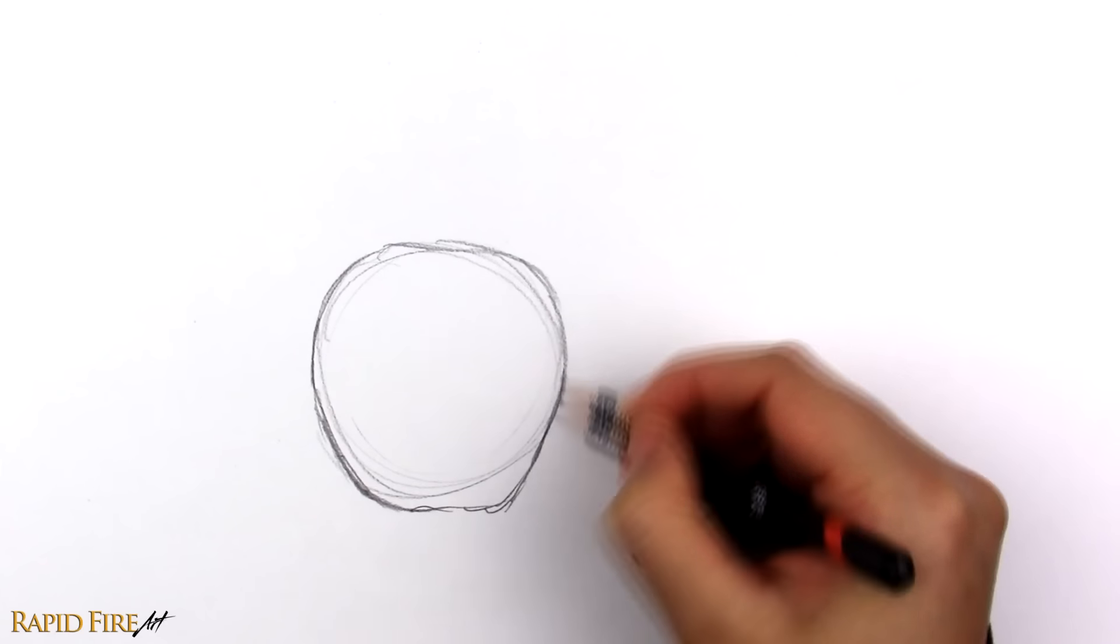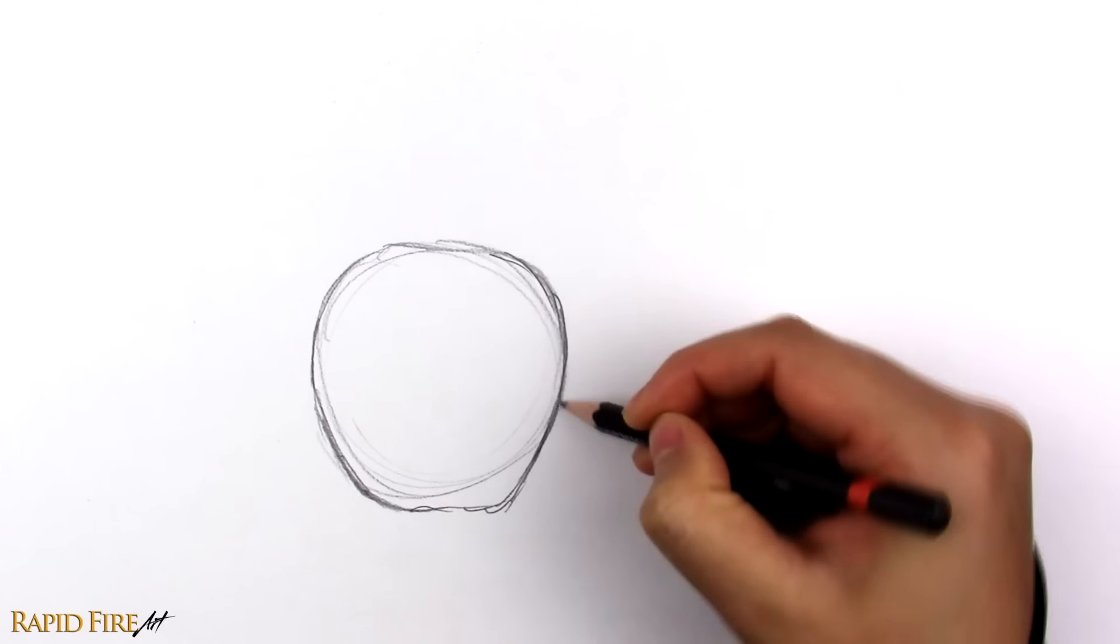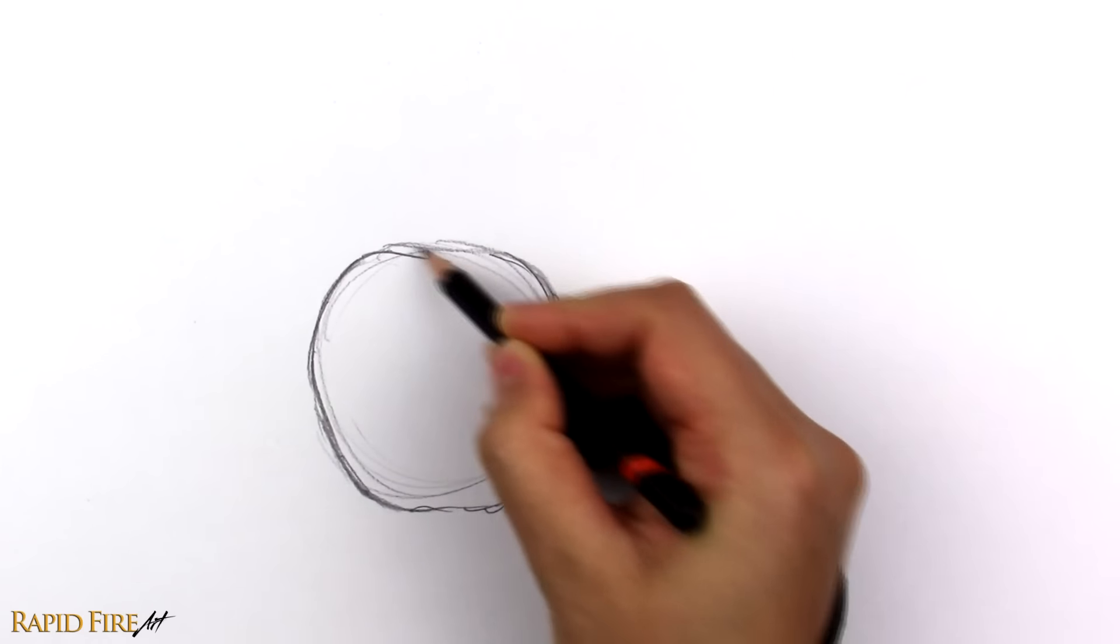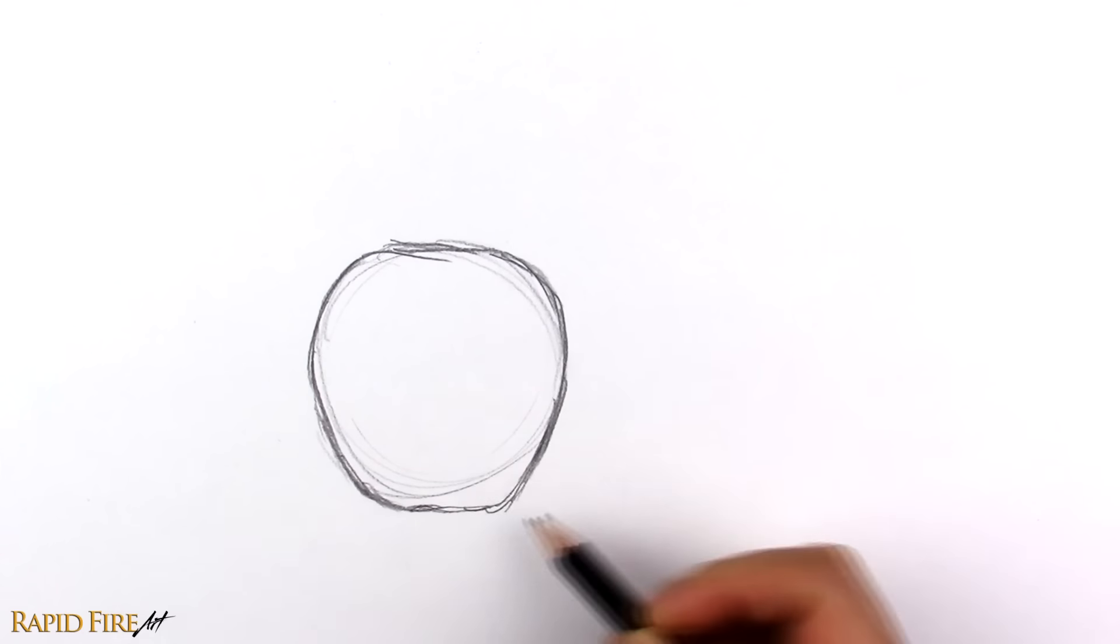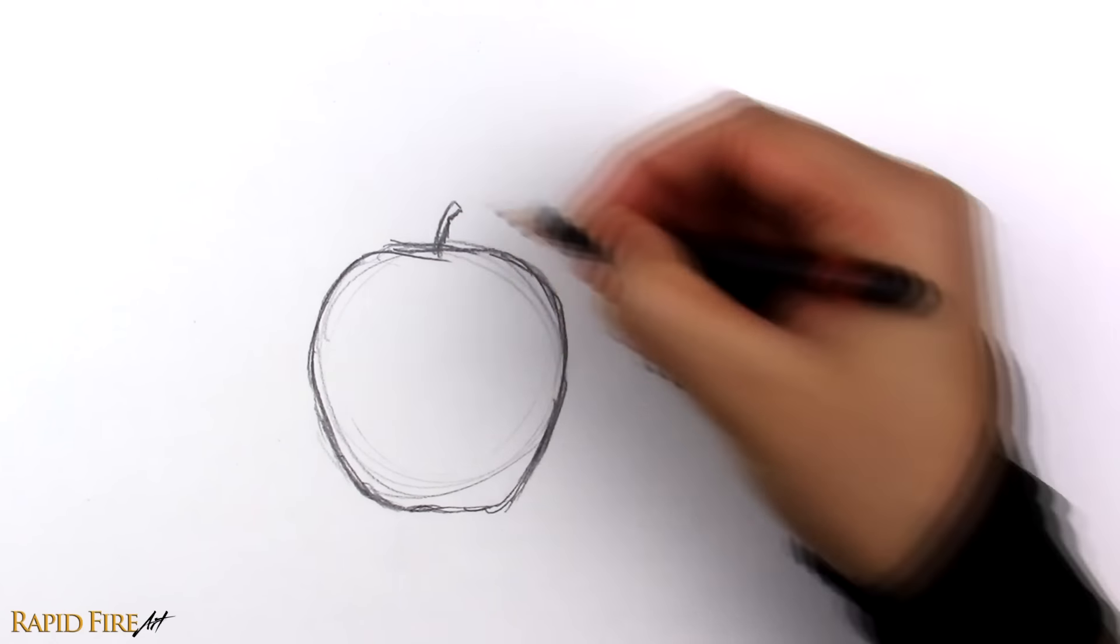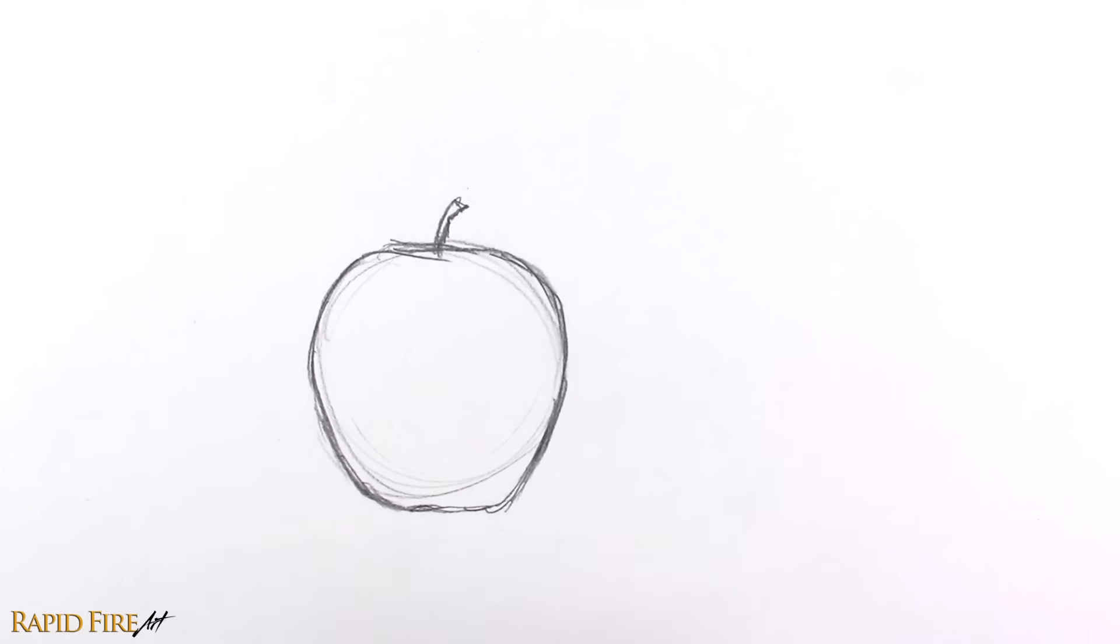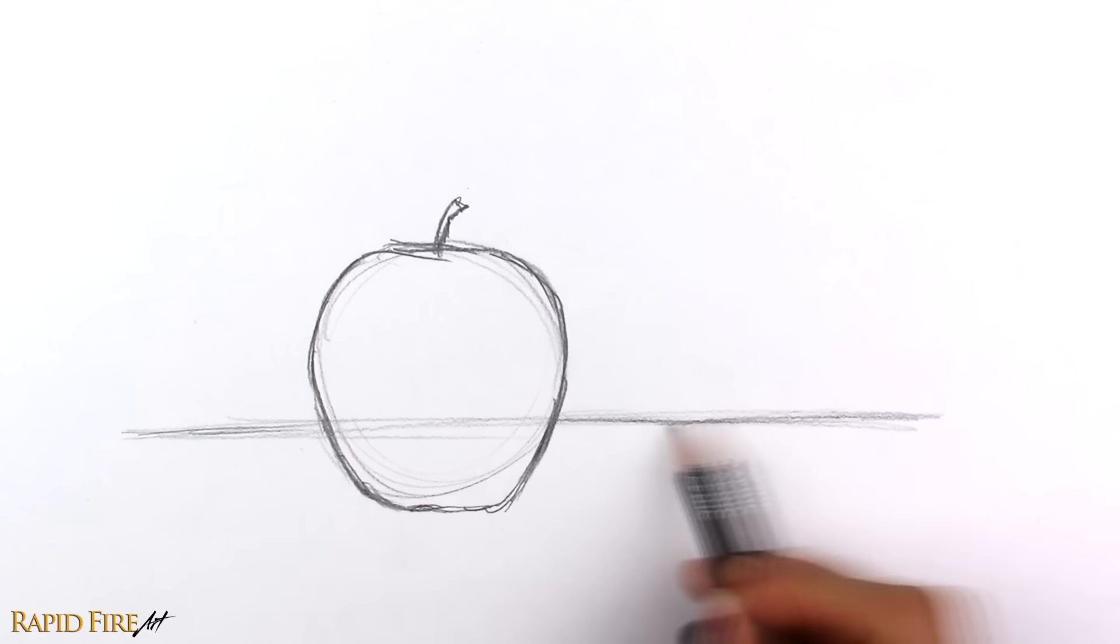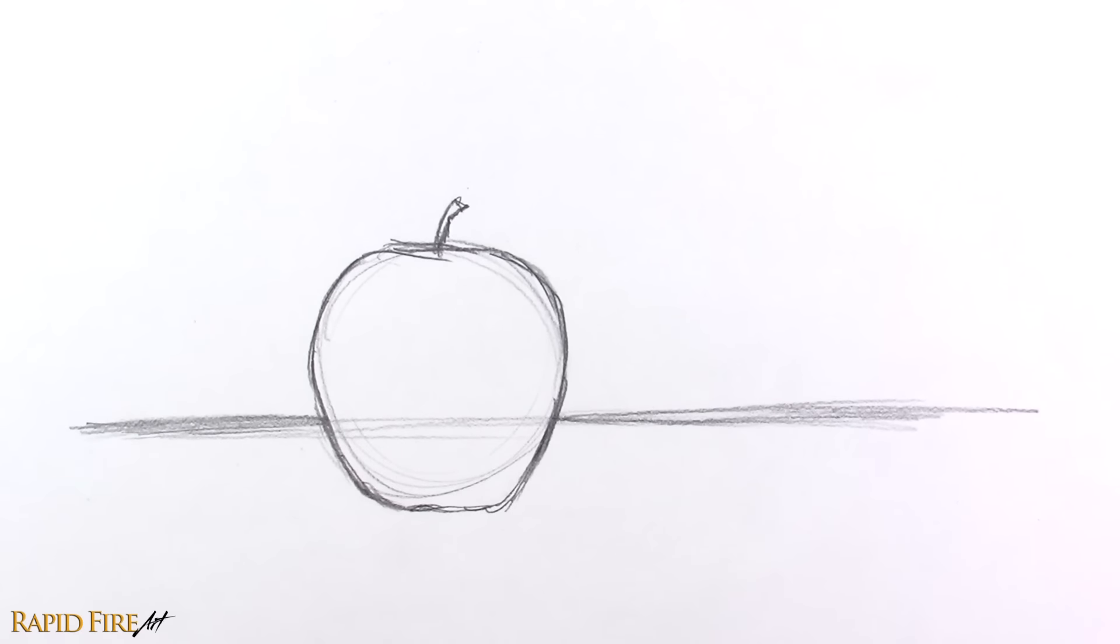First, sketch your apple. It doesn't have to be perfect at all. Just try to get something down on your sketchbook. Try to keep your outlines as light as possible. My sketch is extra dark so you guys can see it better. We want it to sit on a table, so draw the edge of that table behind your apple. Then erase any unneeded lines.